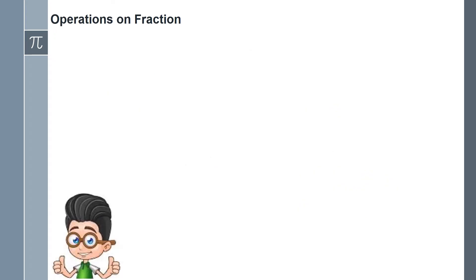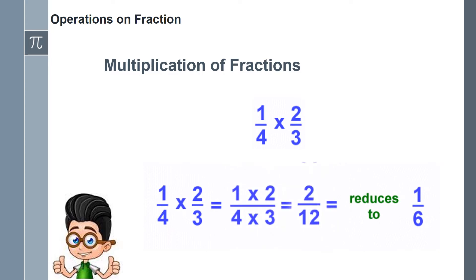Next, let's have the multiplication of fractions. In multiplying fractions, just multiply numerator to numerator and denominator to denominator. For example, 1 over 4 times 2 over 3. So multiply 1 to 2, that is 2. Then multiply 4 and 3, that is 12. So the answer is 2 over 12 which is reduced to 1 over 6.